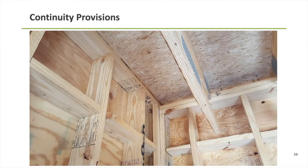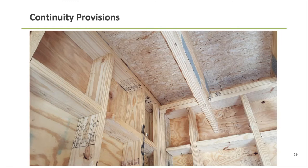Here's a photograph looking up at the underside of a floor system, with a shaft enclosure wall on the left and an exterior wall on the right. Notice the difference in how far these walls extend. The exterior wall on the right stops at the underside of the truss top-chord bearing points, whereas the shaft wall on the left is framed all the way up tight to the underside of the floor sheathing — meeting the continuity definition requirements of a fire barrier.